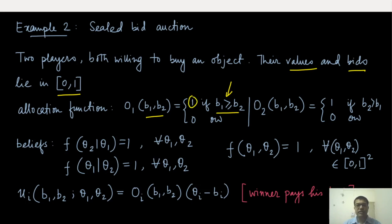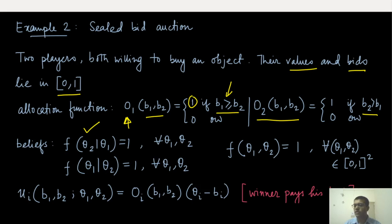Player 1 is given the object. The allocation function — this is an indicator function for player 1 — is 1 whenever the bid for player 1 is at least as much as player 2's, making player 1 the winner. Otherwise, player 2 is the winner. This is the allocation function for player 2. The belief here assumes uniform distribution: given theta_1, theta_2 is uniformly distributed over the entire interval, and similarly for player 2. The common prior is also uniformly distributed — very similar to the previous example.